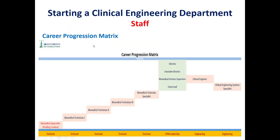Here we see a diagram showing the career progression matrix. Taking the biomedical technician as an example, they are classified based on years of experience. A biomedical technician starts at Level 1, then after a certain period advances to Level 2, then Level 3, and so on.